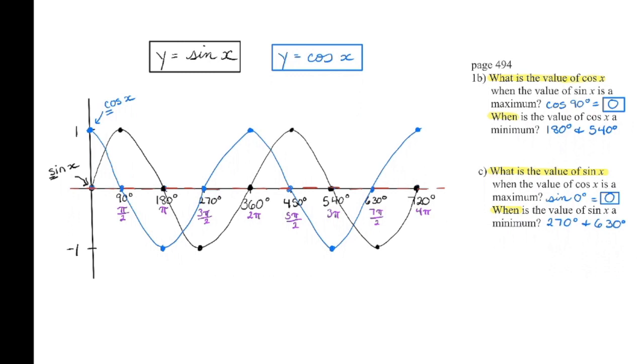And then the second one wants to know, when is the value of cosine a minimum? So I'm going to look at my blue graph, and it's a minimum right here, and it's a minimum right here at 180 and at 540. The next one wants to know, what is the value of sine x when the value of cosine x is a maximum? So I'm going to look at my cosine graph. I'm going to see it's a maximum right here at 0. So I'm going to take the sine of 0, and I can see that I'm also getting a 0 for that sine graph.